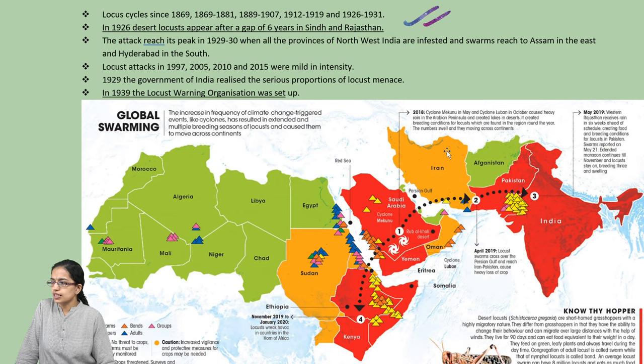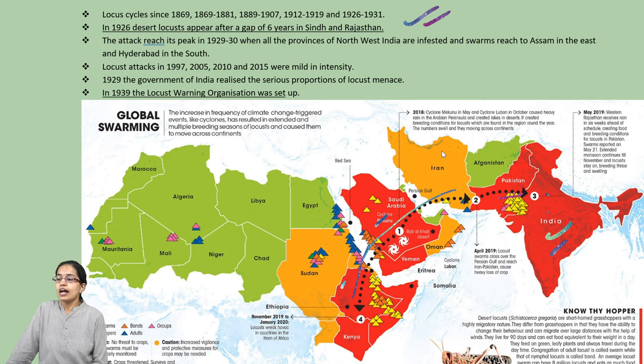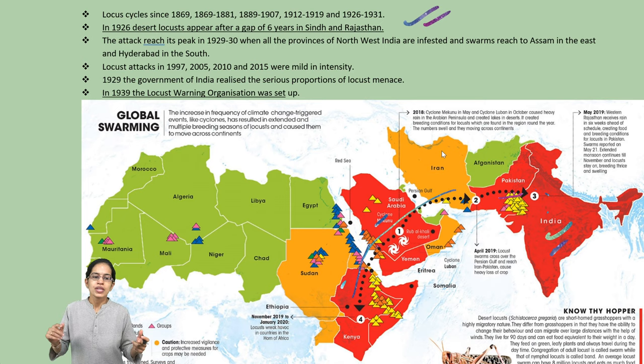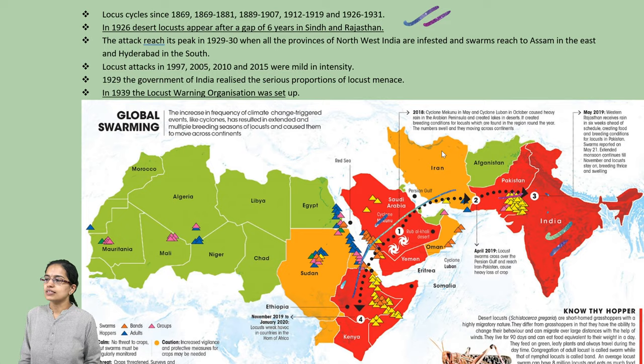The epicenter is seen in the regions of Ethiopia, and slowly and gradually you have the movement that occurs across this whole region. Those marked in red are the most vulnerable areas. Because of increasing global warming, there are multiple breeding seasons and the cycle has further elongated for these locusts, making this migration further significant.